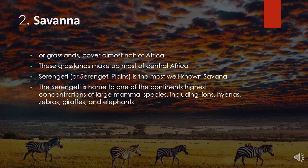These grasslands make up most of central Africa, beginning south of the Sahara and the Sahel and ending north of the continent's southern tip. Among Africa's many savannah regions, the Serengeti, or Serengeti Plains, is the most well known. The Serengeti is home to one of the continent's highest concentrations of large mammal species, including lions, hyenas, zebras, giraffes, and elephants.